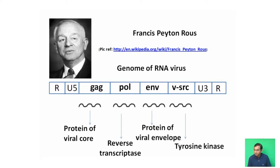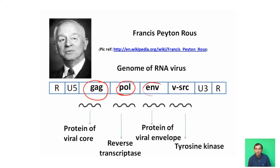The genome of RSV, an RNA virus, consists of the following genes: GAG, which synthesizes protein of the viral core; POL, responsible for the synthesis of reverse transcriptase; ENV, responsible for the synthesis of protein of the viral envelope; and the V-SRC gene, which synthesizes tyrosine kinase responsible for causing cancer. If the V-SRC gene is deleted, tumor will not develop. So SRC gene has been identified as an oncogene.